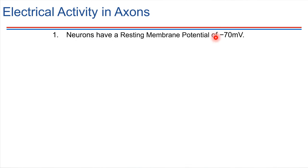That'll be a number you'll definitely want to know. At rest, neurons have a negative membrane potential, which goes along with the fact that the cells tend to have more positive charges outside than inside. That's for a number of reasons — one being the sodium-potassium pumps, which are transporting two potassiums into the cell and three sodiums out of the cell. So they're transporting more positive charge out than in, which helps contribute to that imbalance of charges.